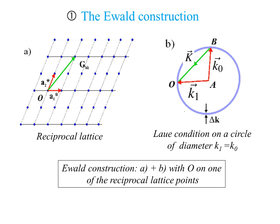If we look at B in the Ewald construction, what we are going to do is make a circle — in general, in three dimensions, this will be a sphere called the Ewald sphere. This sphere has as radius the wave vector. As you know, in elastic scattering, energy is conserved, so |K1| and |K0| are equal. If the difference between these two vectors K1 and K0 — that is, the scattering vector K — equals one vector G_HK, we are in the diffraction condition.